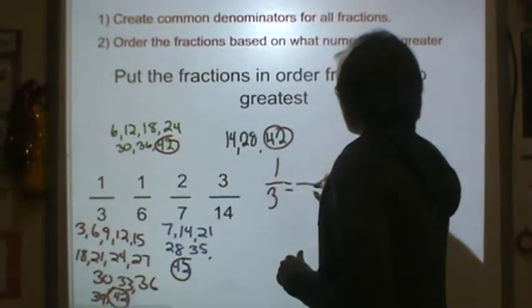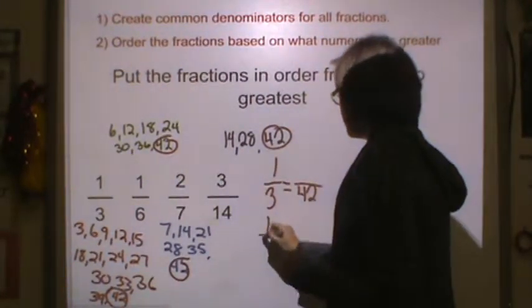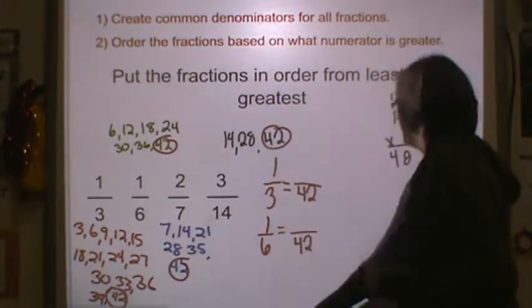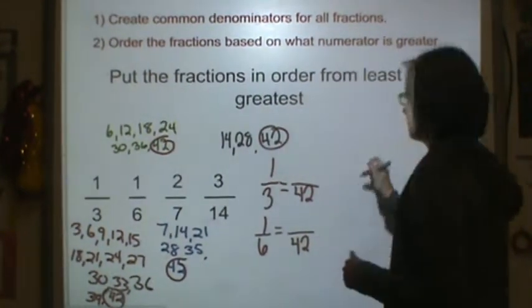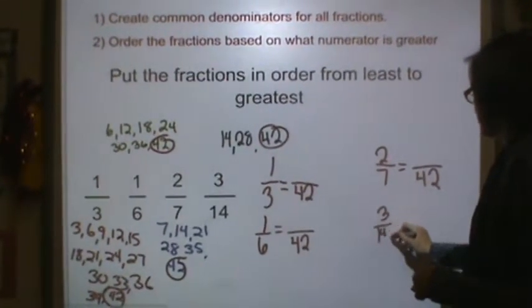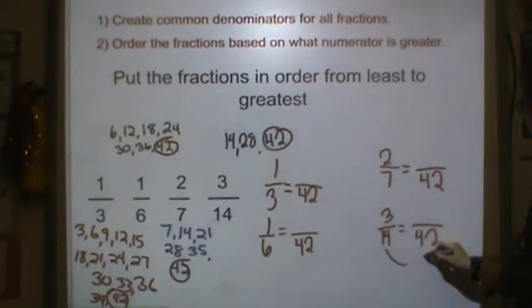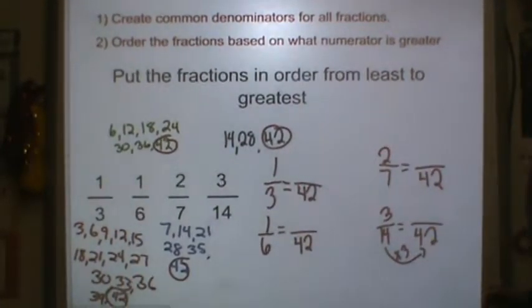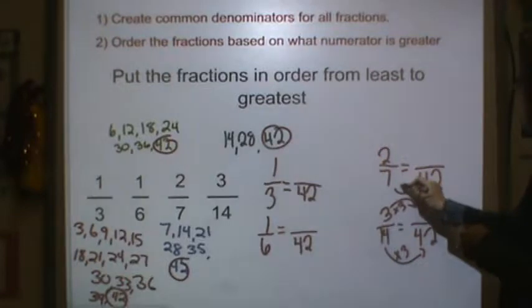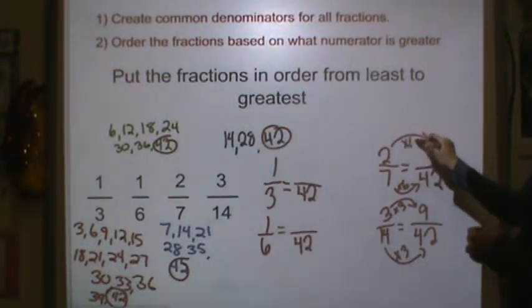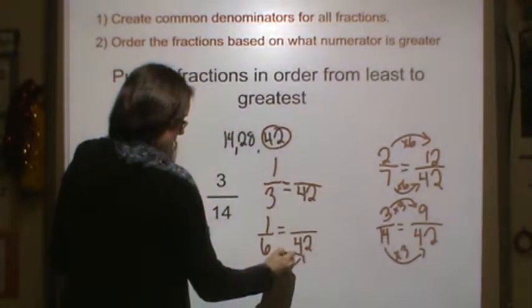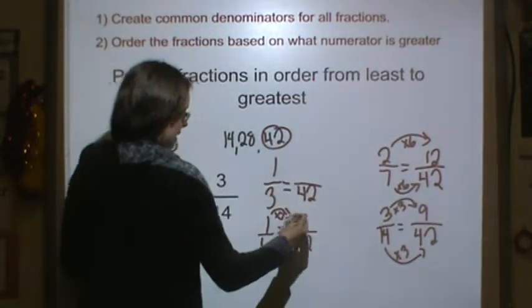So 1/3 is equal to something over 42. 1/6 is equal to something over 42. 2/7 is equal to something over 42, and 3/14 is equal to something over 42. 7 times 6 is 42, so 1 times 7 is equal to 7.